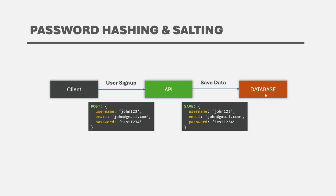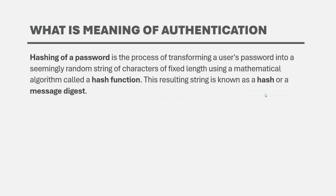To avoid these security risks, we must hash the user password from the API before saving it in the database. Hashing of a password is the process of transforming a user's password into a seemingly random string of characters of fixed length using a mathematical algorithm called a hash function. This resulting string is known as a hash or a message digest.